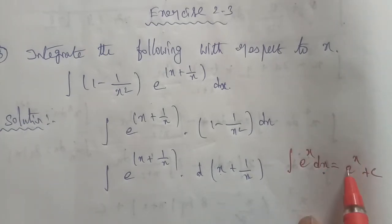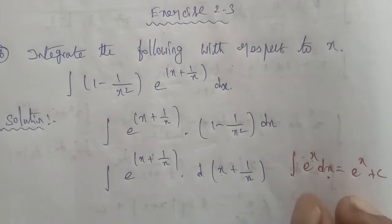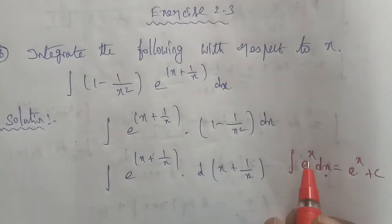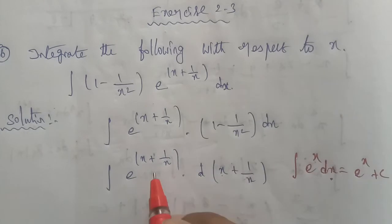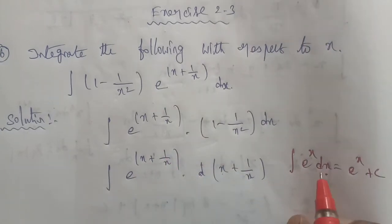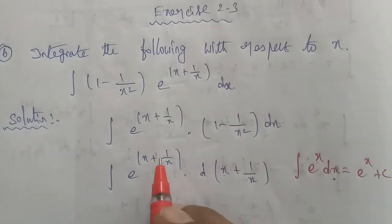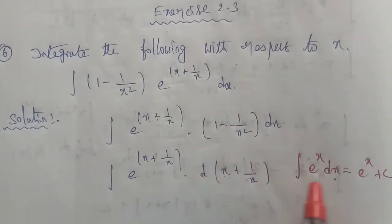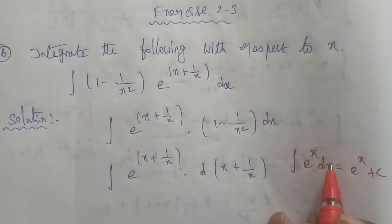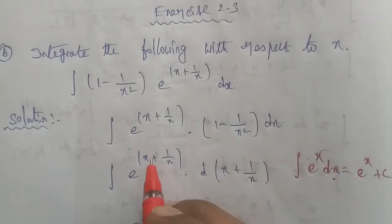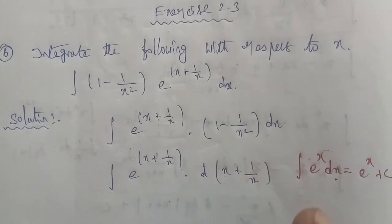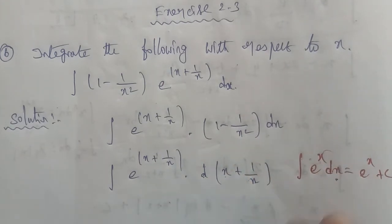And therefore, the result is e power of x. This result means e power of (x plus 1 by x). This is dx. As usual, x plus 1 by x is here. The result and the formula match.